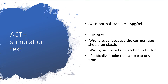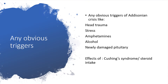ACTH normal level is between 6 and 48 picograms per ml. We have to rule out certain factors: wrong tube — the correct tube to be used should be plastic. Wrong timing is also a concern, as between 6 and 8 AM is the better time to draw the sample. However, if the patient is critically ill, we can take the sample at any time.